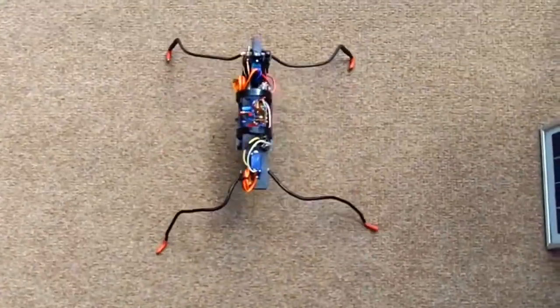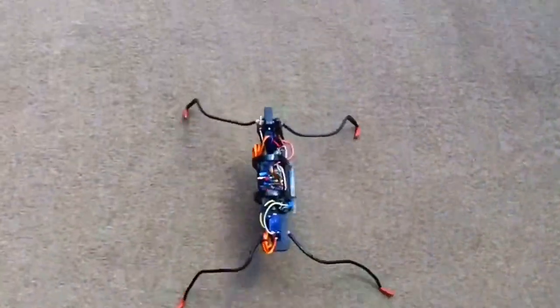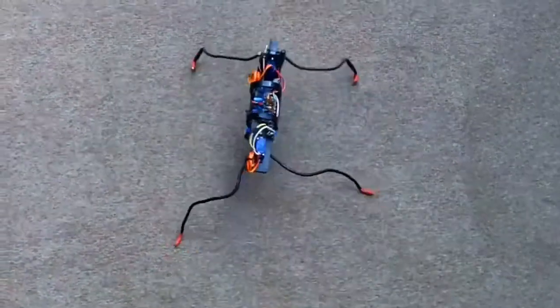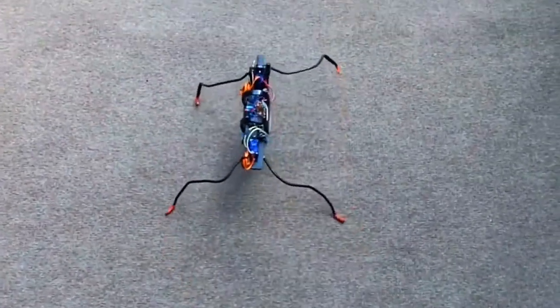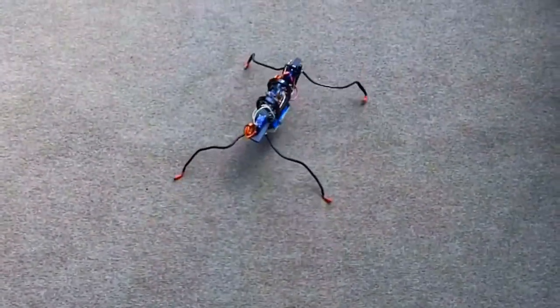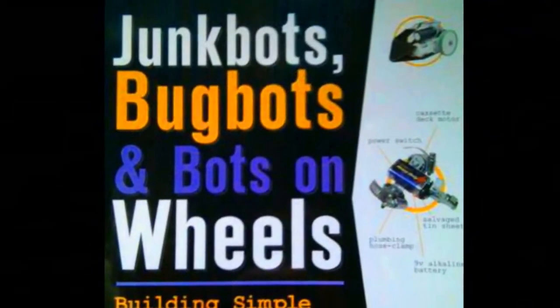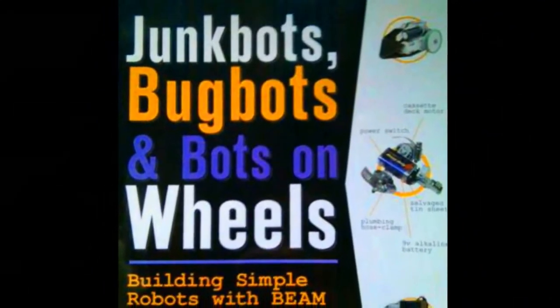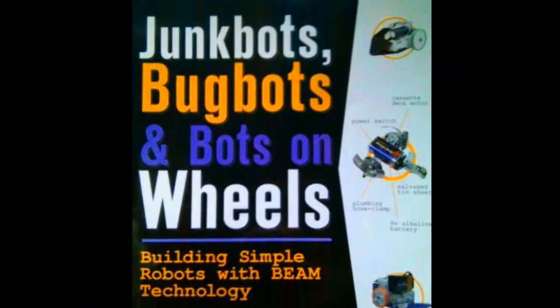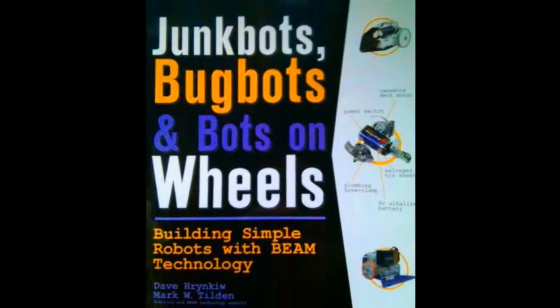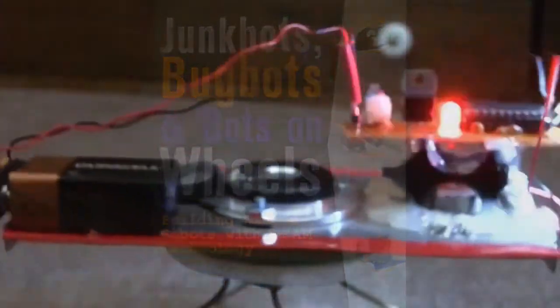I've been building robots lately based on BEAM technology. BEAM stands for biology, electronics, aesthetics, and mechanics, and it's covered in a book by Mark Tilden and Dave Hrynke called Junkbots, Bugbots, and Bots on Wheels. BEAM robots are kind of interesting because they use simpler analog control circuits instead of throwing a microcontroller at a problem.